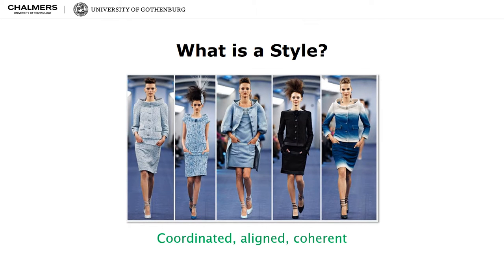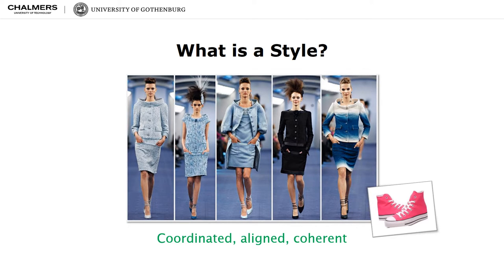Another important aspect of styles is the coordination, alignment, and coherence of its elements. One could observe that the dressing styles on the slide represent a well-coordinated, aligned, and coherent set of clothing wear. However, would you consider the pair of shoes shown on the slide aligned with these dressing styles?